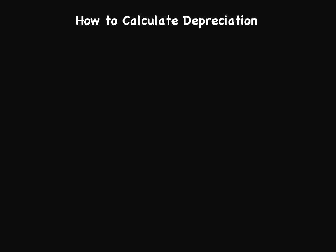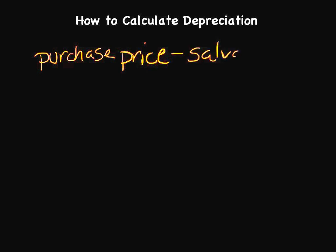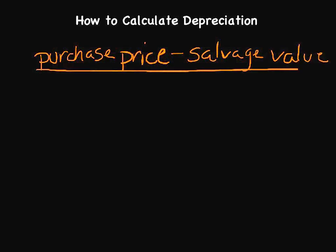So how do we go ahead and do this? There's a basic equation for calculating depreciation using the straight-line method. The first thing we need to know is the purchase price of the particular asset — the amount that we actually purchased it for. Then we need to determine what's called a salvage value. We subtract the salvage value from the purchase price, and then divide that by what we call our estimated useful life.